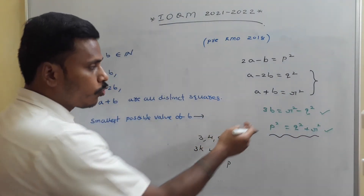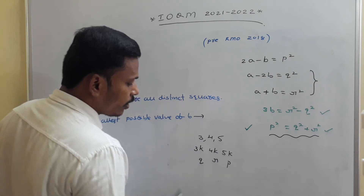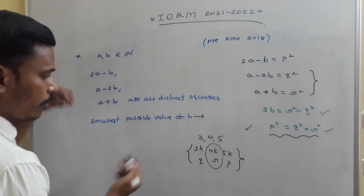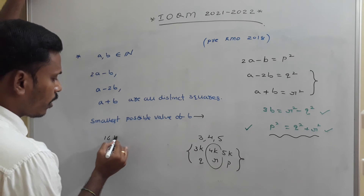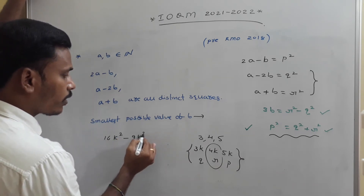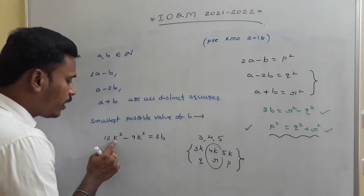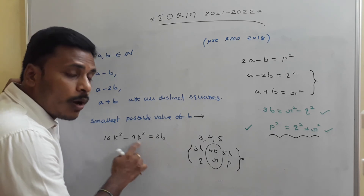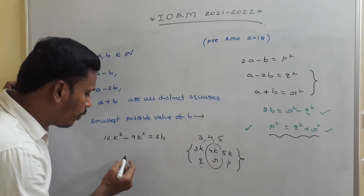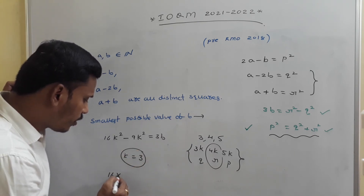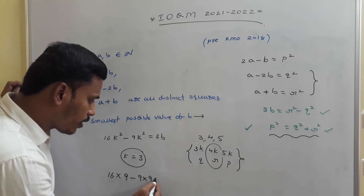Using the 3,4,5 triplet scaled by k: q is 3k, r is 4k, and p is 5k. Then r squared minus q squared equals 3b, so 16k squared minus 9k squared equals 3b. For the right side to be a multiple of 3, we take k equal to 3, giving 16 times 9 minus 9 times 9 equals 3b.